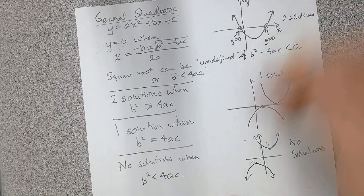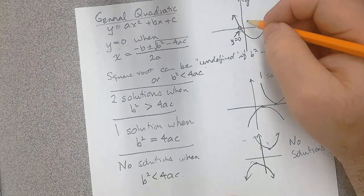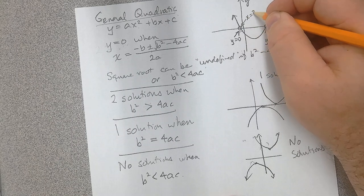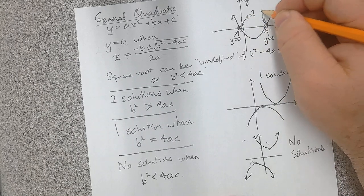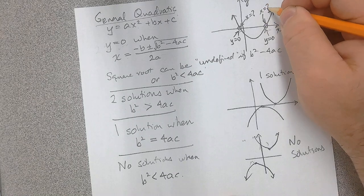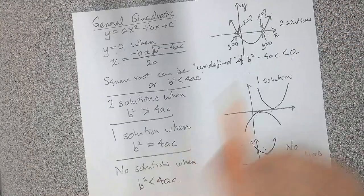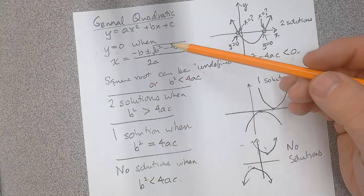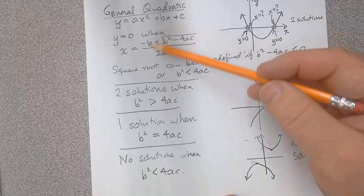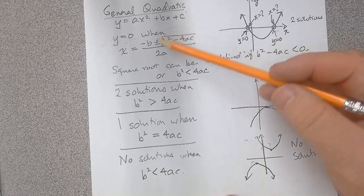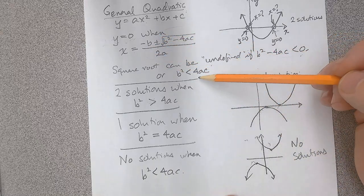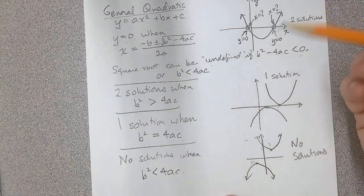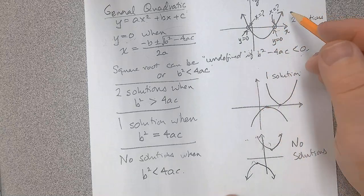We call it the x-intercept, but when y equals zero, what is x? We don't know what x is. We can answer both questions: not only can we find out what those x values are, we can also, even before we apply the full formula, get an idea of how many solutions exist beforehand.